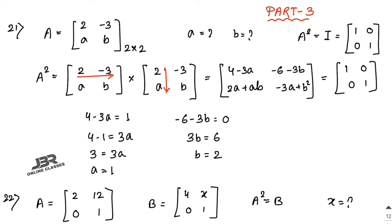In sub number 21, A equals the matrix [2, -3; a, b]. You have to find out the values of small a and small b, where A² equals I, meaning the identity matrix [1,0; 0,1]. First, find A² by multiplying A into A.